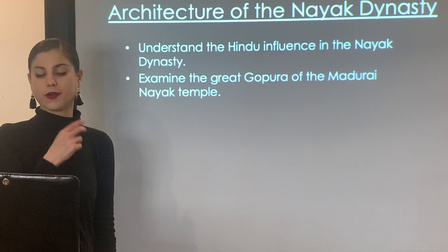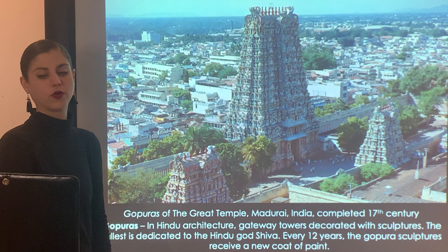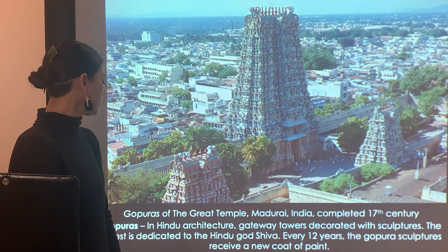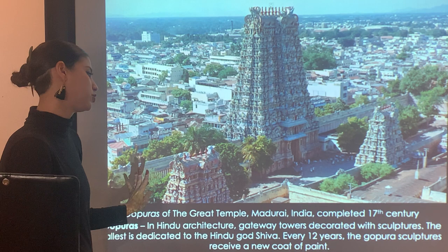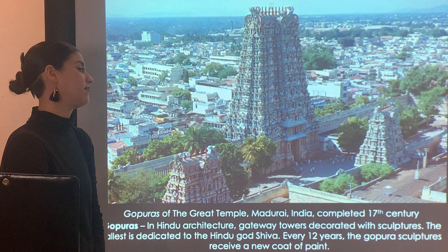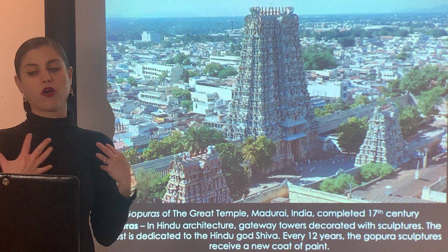Looking at the architecture of the Nayak dynasty — the Gopuras of the great temple in Madurai, India, completed in the 17th century. The Gopuras are important to Hindu architecture: they are gateway towers decorated with sculptures. The tallest is dedicated to the Hindu god Shiva, the destroyer of the universe. Every 12 years the Gopuras' sculptures receive a new coat of paint — carved and embellishing every square inch of the temple, also painted in great detail with bright colors.